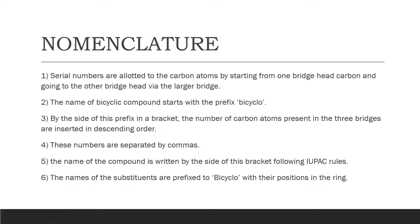Now, how do we name these compounds? The locants are allotted to carbon atoms by starting from one bridgehead carbon and going to the other bridgehead via the larger bridge. You start by naming the ring which has more number of carbon atoms. If both rings have the same number of carbon atoms, you follow priority of any particular functional group or substituent so that the substituent gets the least locant number. The name of a bicyclic compound starts with the prefix 'bicyclo'.